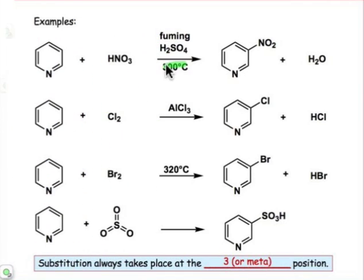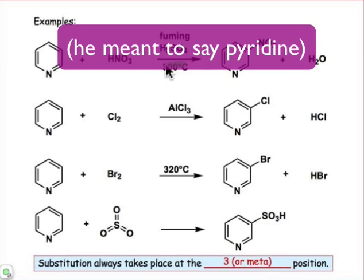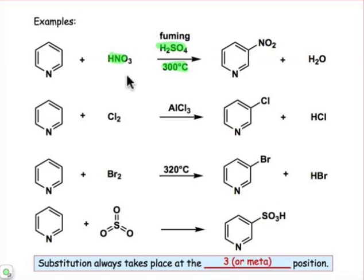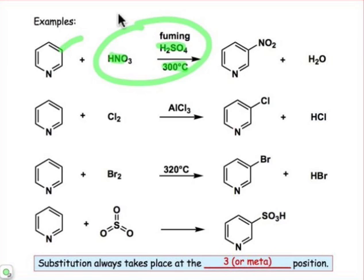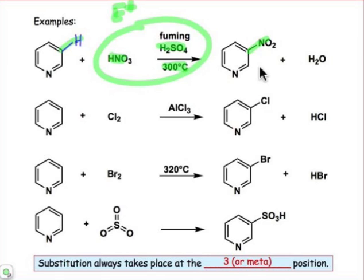In order to do an electrophilic aromatic substitution on pyridine, it requires really forcing conditions — demanding conditions like fuming sulfuric acid in the presence of nitric acid at a ridiculously high temperature. We're going to do an electrophilic aromatic substitution reaction. The electrophile attacks the π system, which serves as the nucleophile, and the substitution replaces that hydrogen atom — a hydrogen-for-nitro group replacement.